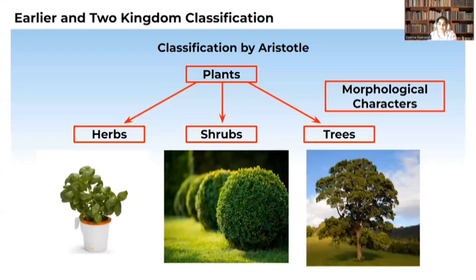Earlier, there was a two-kingdom classification which was proposed. It was proposed by Aristotle, and according to Aristotle, he divided the plants into herbs, shrubs, and trees based on morphological characters. Herbs are very small plants, shrubs are medium plants, and trees are big plants. So based on morphological characters and size, Aristotle classified the plants into herbs, shrubs, and trees.